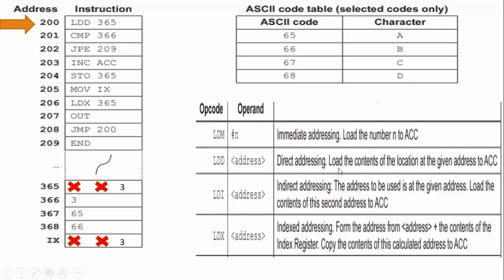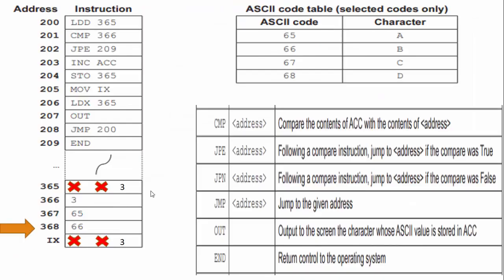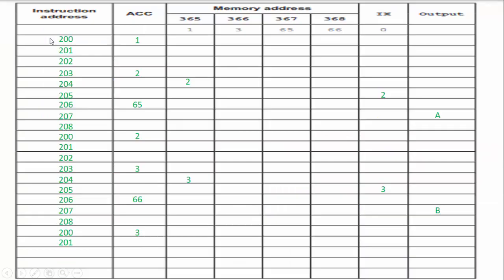We have direct addressing — load the contents of the location at the given address to the accumulator. I'm going to load up 365. What is the most recent value of 365? That is three. So line 200 runs; I put three in my accumulator. Then we look at line 201 — the compare. We're comparing address 366 with the value of three, and 366 is three. Three and three comes out to true. I document that address 201 executed.